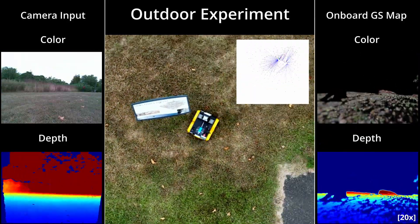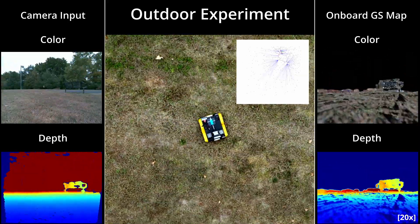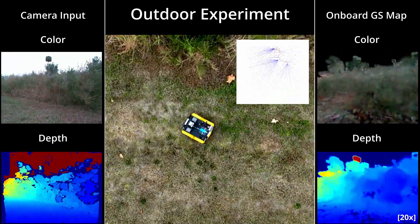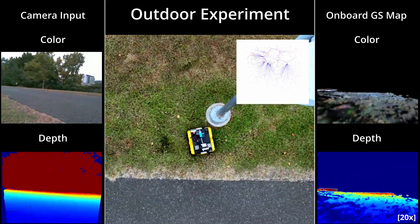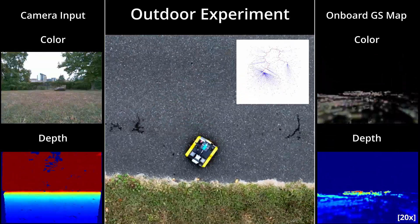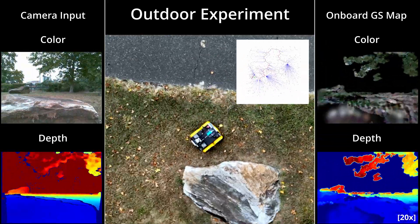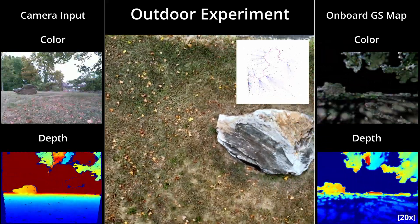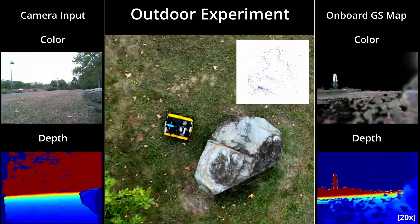Through our experiments, we show that our approach is able to guide the robot to extensively explore both cluttered indoor environments and large outdoor spaces while maximizing both photometric and geometric map reconstruction quality. This enhances downstream tasks such as scene understanding and offline reconstruction of high-fidelity radiance fields.